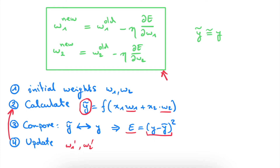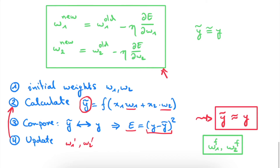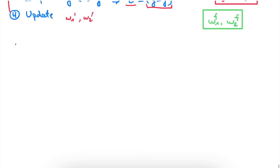This loop is iterated thousands of times to get the network output very close to the real output for the training set. At some point, w1 and w2 reach their final values, at which point the network output is very close to the real output for the training sample, and the trained weights define a neural network able to process new inputs and hopefully output the right results.